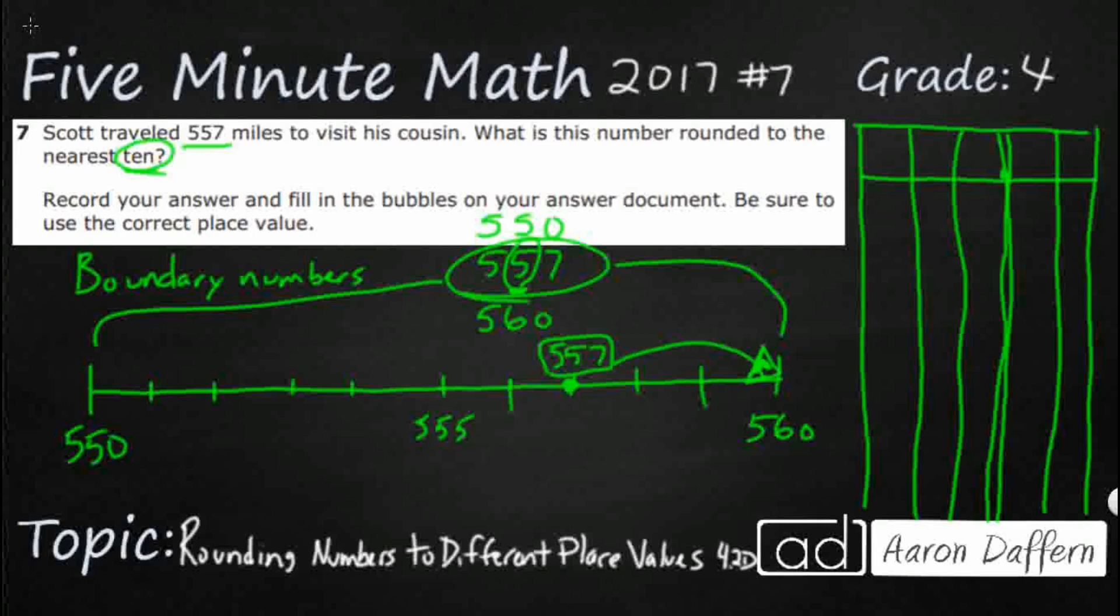So when we're rounding numbers, that's actually what we're doing. We're looking at the two boundary numbers and we're saying, which boundary number is it close to? Now, obviously, we've got to find the boundary numbers. That was this process right up here. And some of us have learned to do that without drawing all of this.